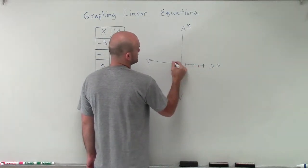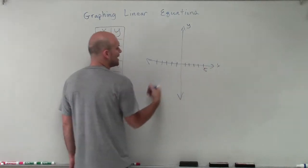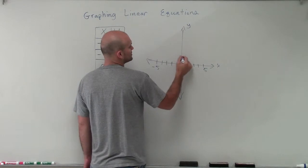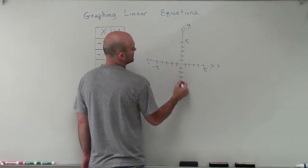So 1, 2, 3, 4, 5. 1, 2, 3, 4, 5. Remember, when we go in x in the positive direction, it's going to be positive. To the left is going to be negative. For the y-axis, going up will be positive. 1, 2, 3, 4, 5. And down will be negative. 1, 2, 3, 4, 5.